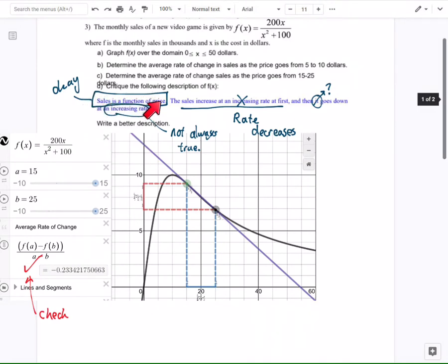That's why this particular critique or this description is flawed. It says sales is a function of price. Well, I agree that's true. We could be a little bit more specific. But then it says sales increase at an increasing rate at first. That part about the increasing rate, I disagree. See how it's slowing down? So as the revenue increases, we're going to be at a decreasing rate at first. And then it says revenue goes down at an increasing rate. That's also not exactly true. Originally, the revenue starts to drop at an increasing rate, but mostly we have a decreasing rate here. So here's how I answer the description.